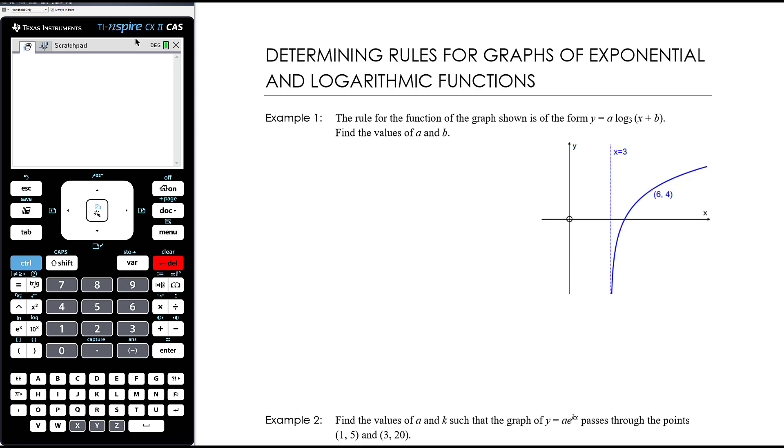So the first one, we have that the rule for this function that we can see pictured here is of this form. So we can see it's a log with a base 3. So you're not going to be able to determine that from the graph. You're going to have to have some information about the sort of form of the equation when it's a log or an exponential. And we want to find the values of a and b. So b is going to come from the fact that we can see where the asymptote is and that tells us about the translation. OK, so we can see that there's been a translation 3 to the right, which means that b is going to have to be 3.